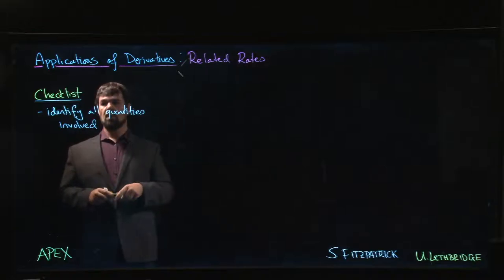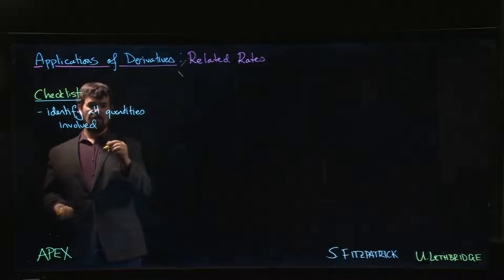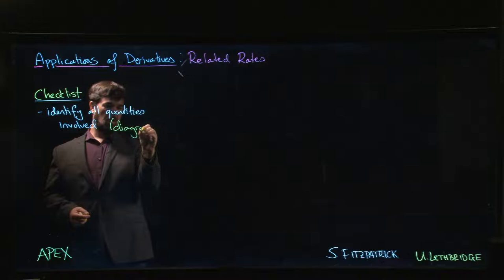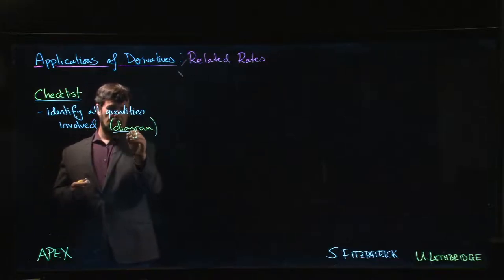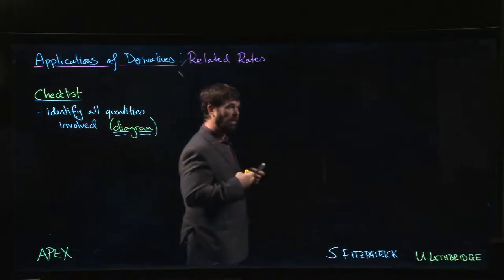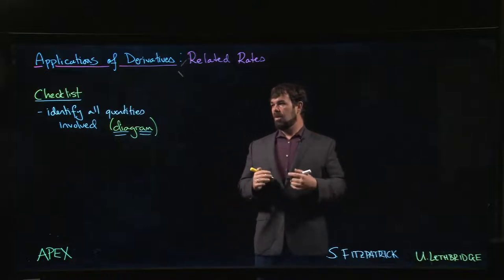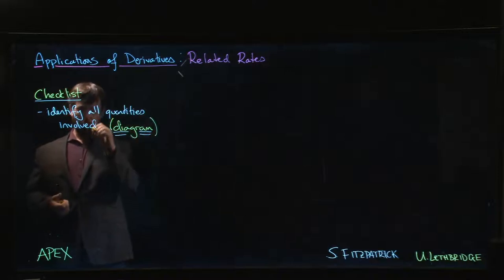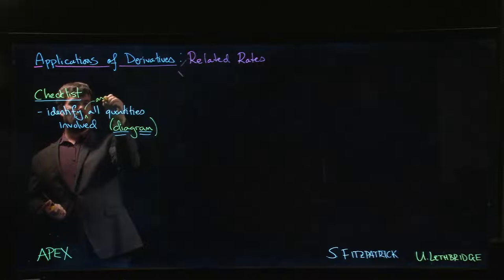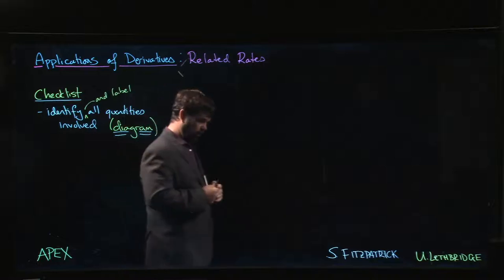One thing that usually helps with identifying these quantities is to draw a diagram. In these word problems, we can't overestimate how useful it is to have a diagram just to write down the quantities. You have to identify them, figure out what things you're dealing with, and also label them - give them names and variable names if necessary.